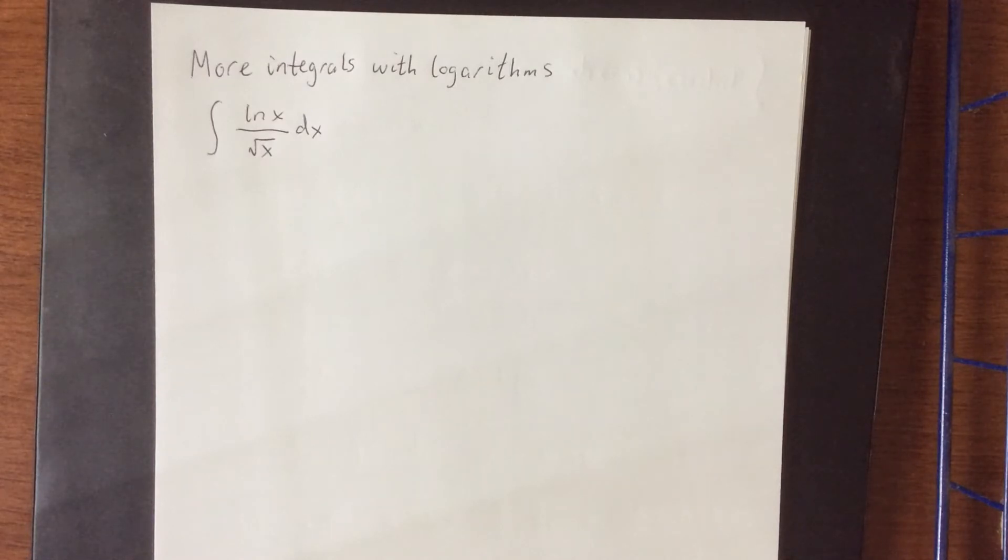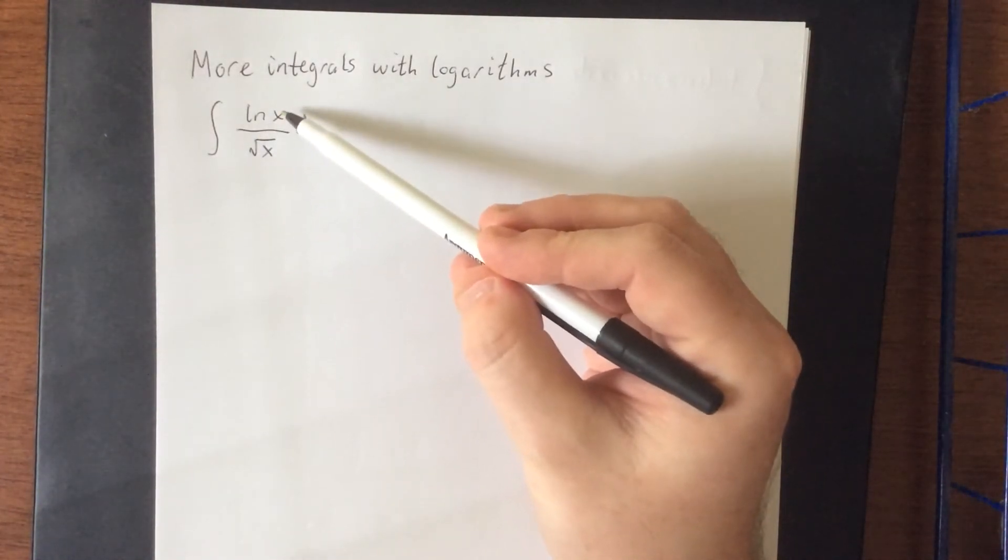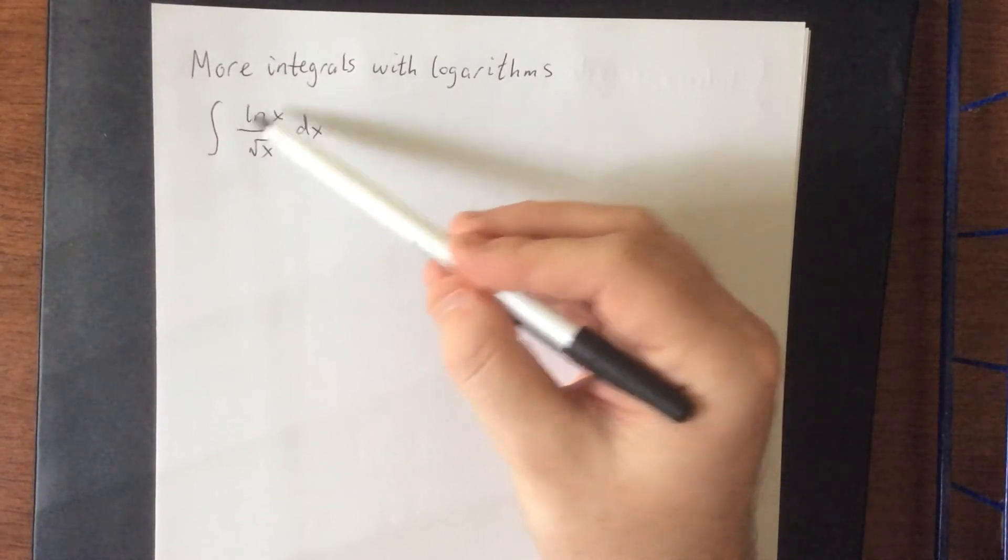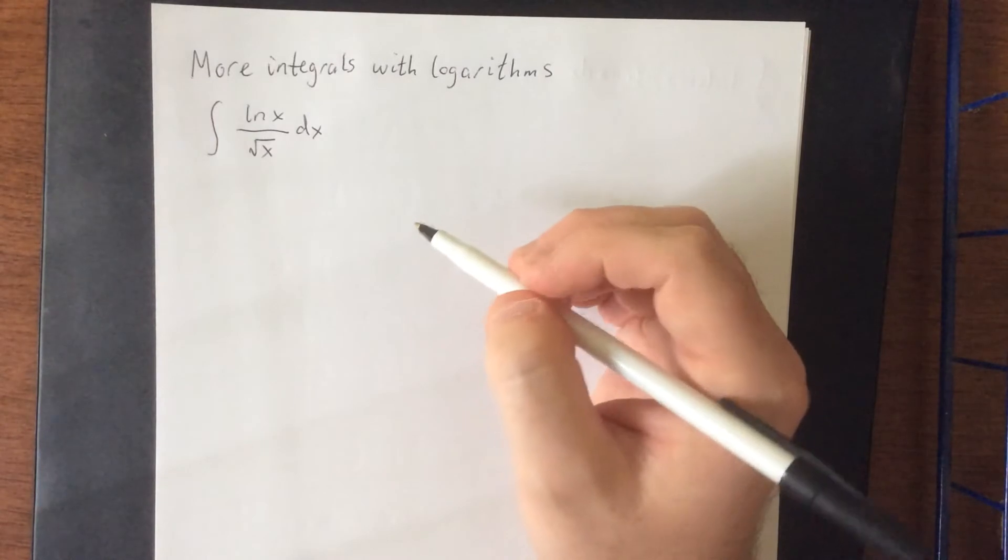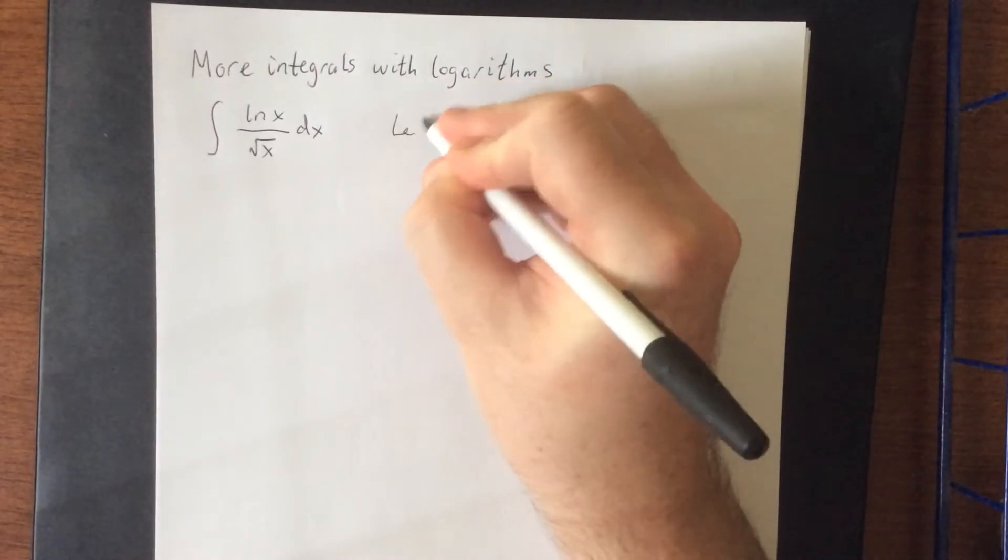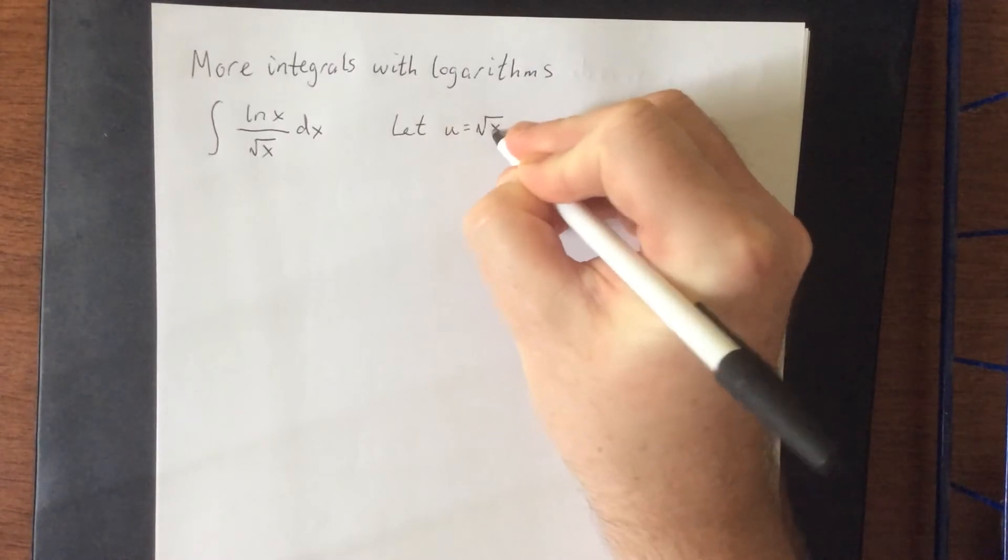It may not be readily apparent exactly what substitution you might want to use here, but I would like to point out that any time you have any constant multiple of the natural log of x, you can wind up with x raised to whatever that coefficient was by using the appropriate property of logarithms. So what I'm going to recommend for this one is just try let u being equal to the square root of x.